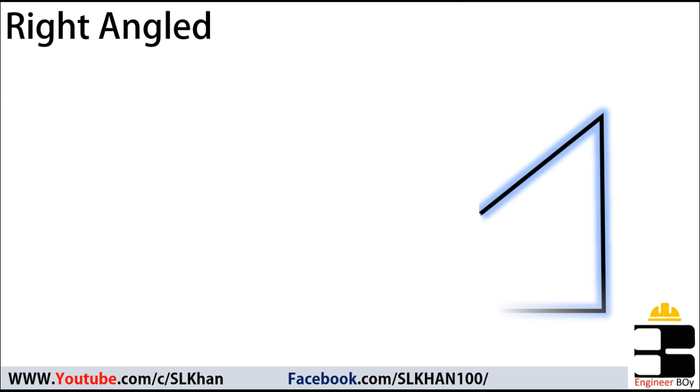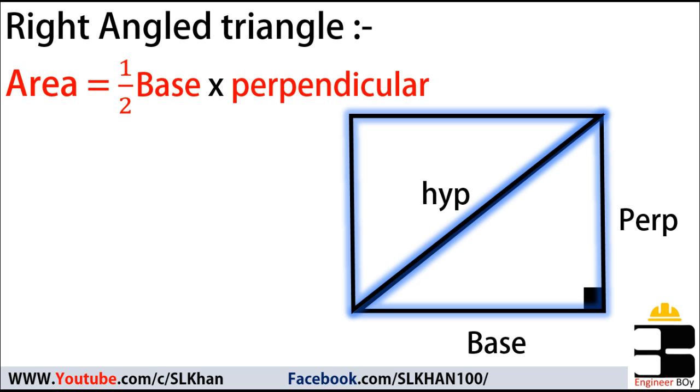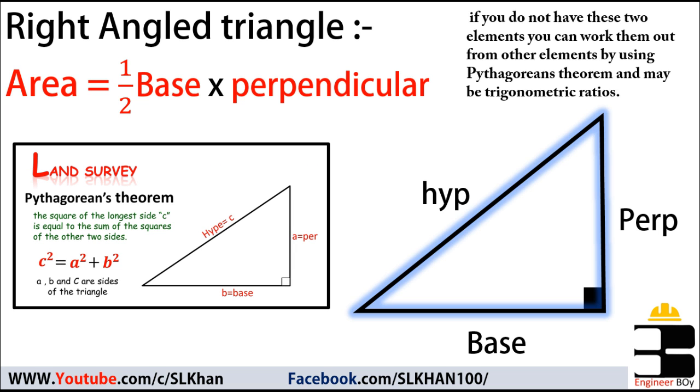So the area of this triangle must be one half times base cross its perpendicular, which is actually just half of the rectangle. So whenever you have base and perpendicular of the triangle that is a right angle triangle, you can use this simple formula to determine its area. Also if you don't have these two elements you can work them out from other elements by using Pythagorean's theorem and maybe trigonometric ratios. To learn Pythagorean's theorem in detail just go and watch it in the same channel. Link to that video is down below in the video description.